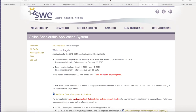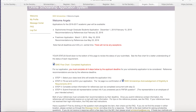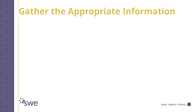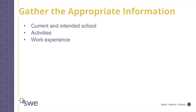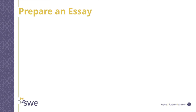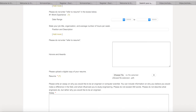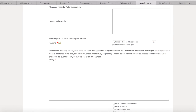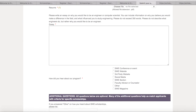Once you've determined you're eligible for SWE scholarships, you can gather the appropriate information. Aside from your current school and intended school, you will enter activities, any work experience and awards, etc. You'll upload a current transcript, a resume, and possibly an acceptance letter. You'll also need to prepare an essay on why you would like to be an engineer or scientist. We recommend writing the essay offline and pasting it into the text box provided.